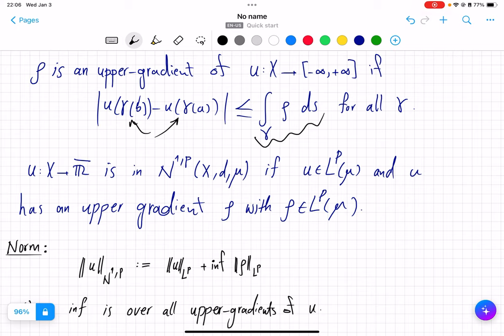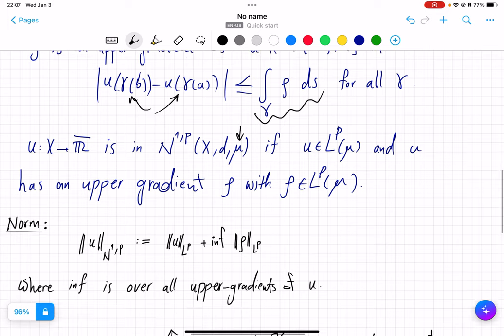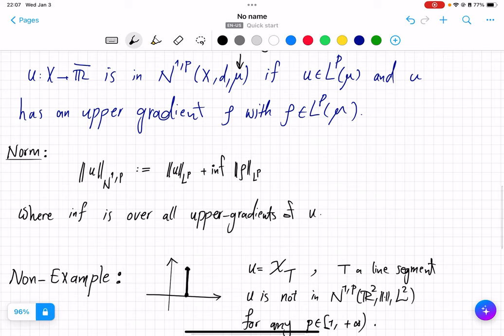With respect to this metric space and a measure on it, usually Borel, if u itself is an Lp-integrable function, and it has at least one upper gradient which is also Lp-integrable. And on such functions, we can define a norm by infimizing over all Lp-integrable upper gradients of that function.